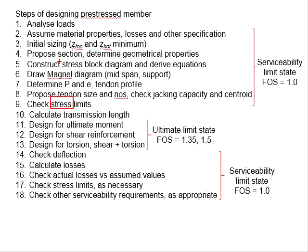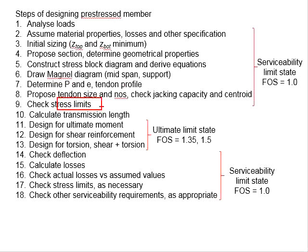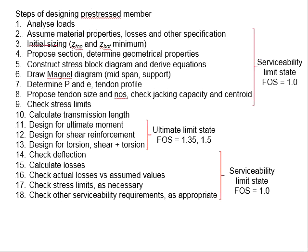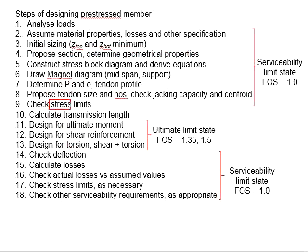The stress within the members is calculated from the stress block diagram and the derived equations. There will be limits for compression and tension. Based on the proposed P, E, tendon and tendon profile, and in accordance with the assumed material property, losses and other specifications, and on the basis of the proposed geometry of the section, calculate the actual stress acting on the member. The stress must fall within the limits for concrete in compression and tension.